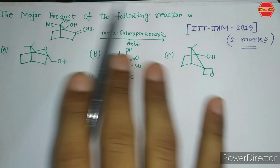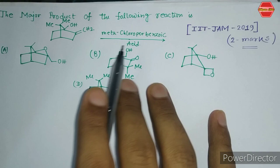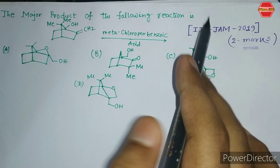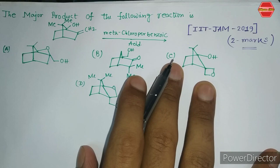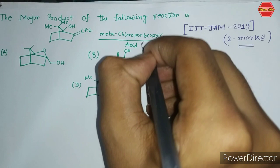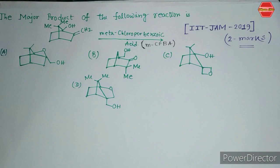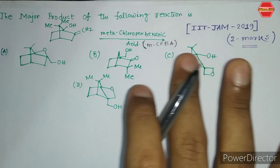The question is quite interesting and conceptual — that's why I'm taking it, because this question has two types of concepts used in the overall reactions. The question asks for the major product of the following reaction. You have been given a substrate and the reagent metachloroparbenzoic acid, which in short we call MCPBA.